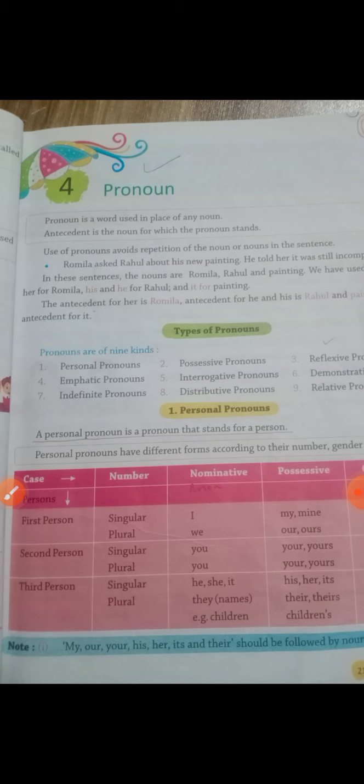Definition yeh likho gap aap apni copy mein: 'Pronoun is a word used in place of any noun.' Antecedent is the noun for which the pronoun stands. Aur antecedent kya hota hai? Voh noun hota hai — voh particular noun hota hai. Jaise hamne aapko example diya Samira wala, toh Samira hai aap hi kya hai? Antecedent hai. Is the noun for which the pronoun stands.